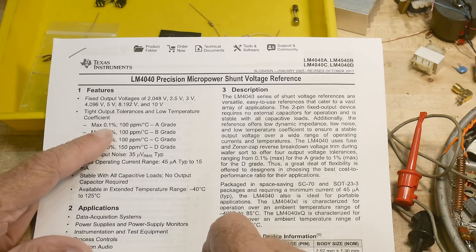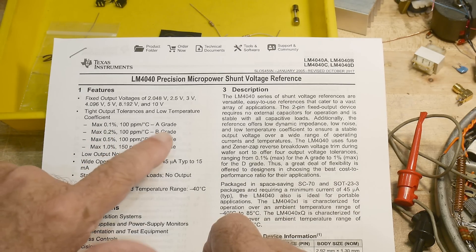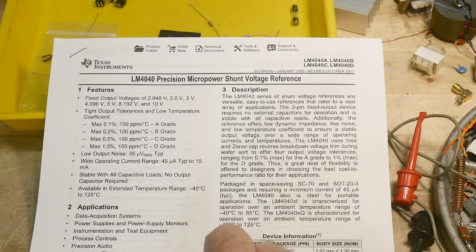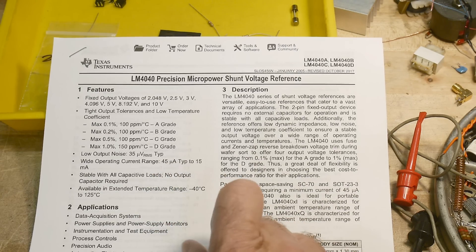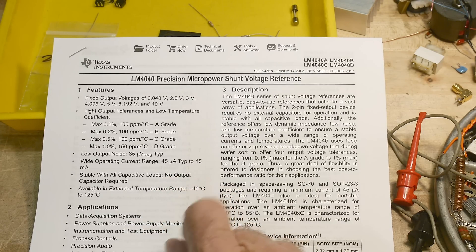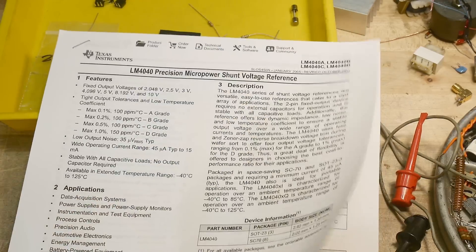Let's see what the claim to fame here is. Fixed outputs. You can get it various outputs. This is the five volt version. Tight tolerances, 0.1% A grade, B grade. I guess we have a B grade, so it's 0.2%. Very nice. 35 micro volts RMS noise, wide operating current range up to 15 milliamps, stable with all capacitive loads. You can use it for anything it says.